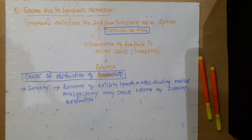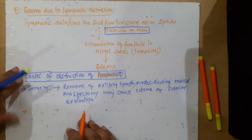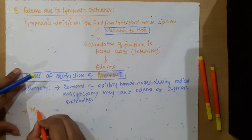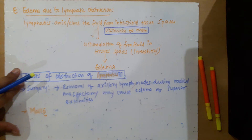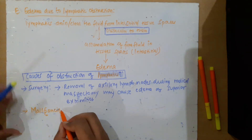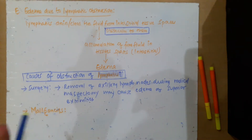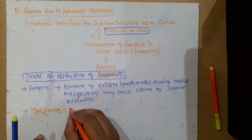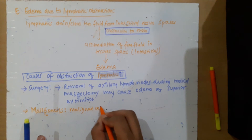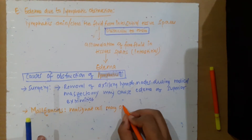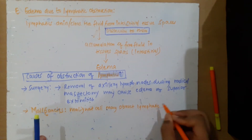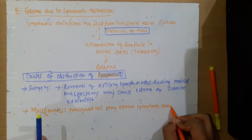The second cause is malignancies. Malignant cells may obstruct the lymphatic channels.